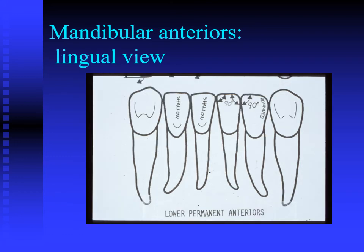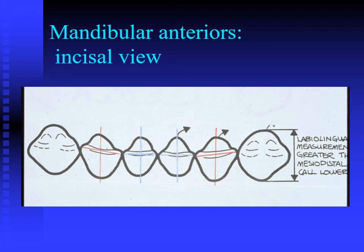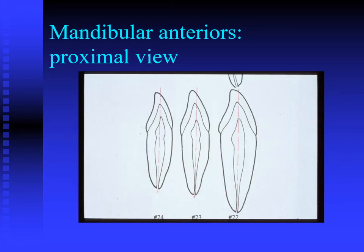Looking at the lingual view of the mandibular incisors, there isn't much to see anatomically — it's pretty indistinct. The incisal view shows the relationship between mandibular central and lateral incisors: the centrals are almost at right angles to each other and very symmetrical, while the incisal edge to cingulum axis is twisted on the lateral incisors. All of these teeth have a labiolingual measurement greater than their mesiodistal measurement.